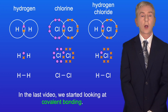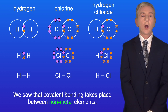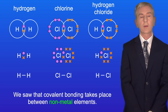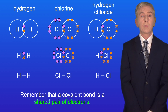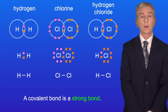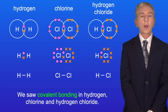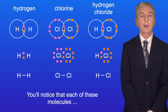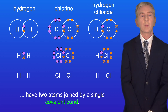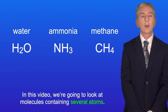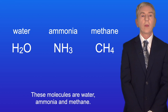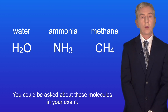In the last video we started looking at covalent bonding. We saw that covalent bonding takes place between non-metal elements, and remember that a covalent bond is a shared pair of electrons. A covalent bond is a strong bond. We saw covalent bonding in hydrogen, chlorine and hydrogen chloride, and you'll notice that each of these molecules have two atoms joined by a single covalent bond. In this video we're going to look at molecules containing several atoms — water, ammonia and methane — and you could be asked about these molecules in your exam.